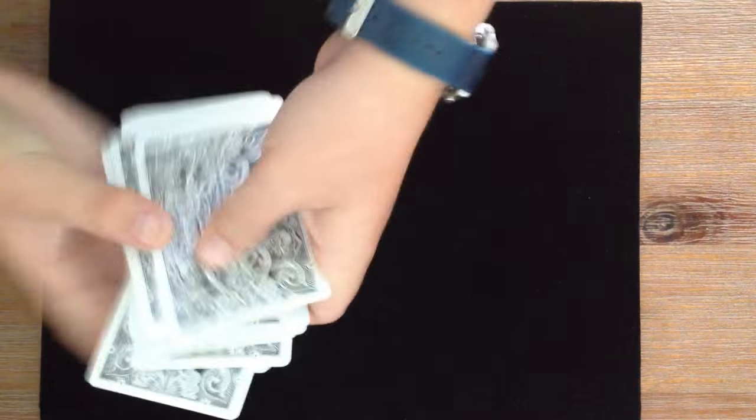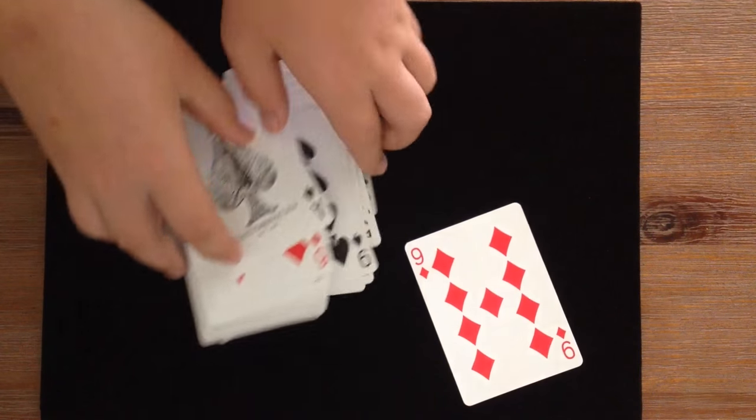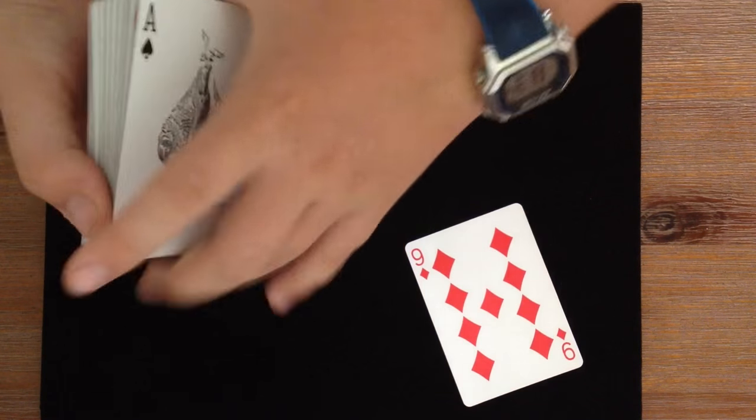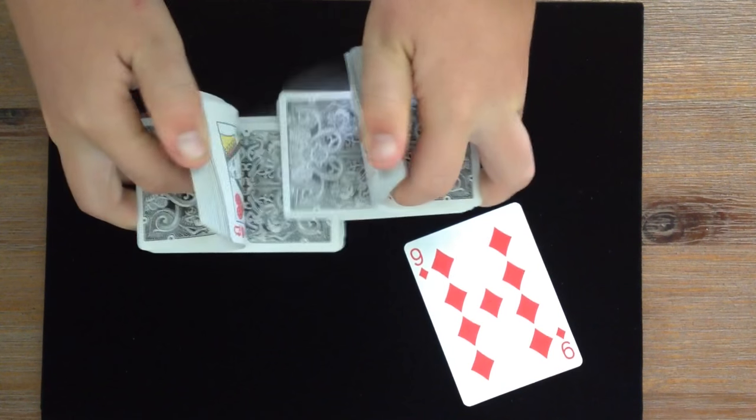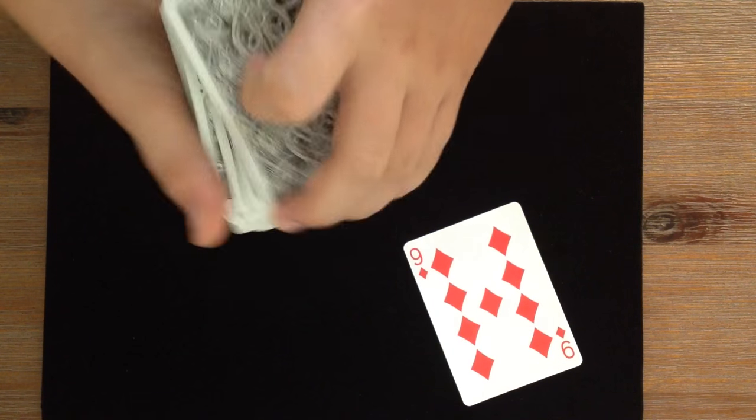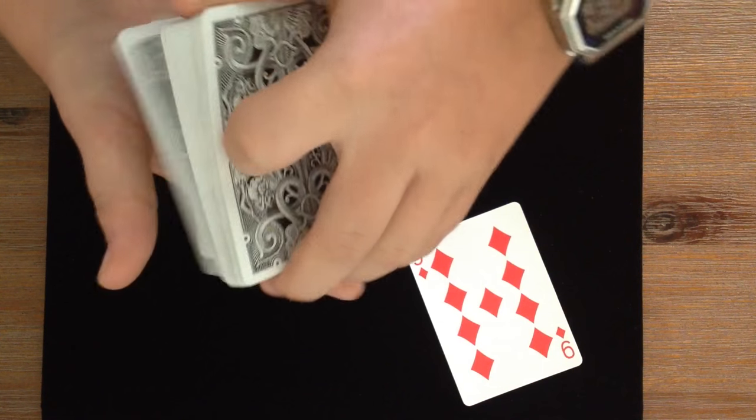I'll try that again. So they truly do have a free choice. Let's just say they picked the nine of diamonds. They could have selected any card they liked, but they selected the nine of diamonds. It's a very nice card. Now what I'm going to do is I'm going to take the nine of diamonds and I'm going to get you to remember it, but I'll also remember it.